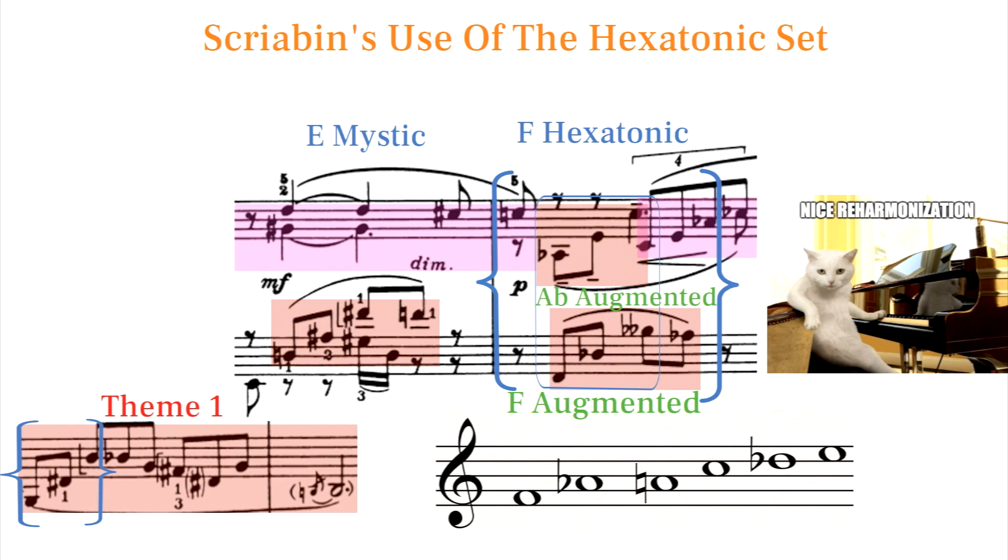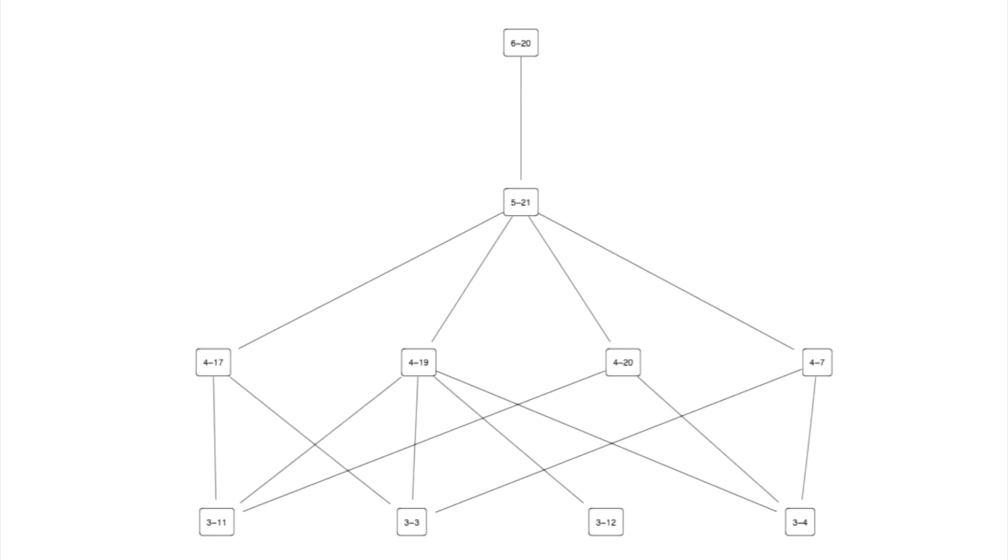There's only one five note subset of the hexatonic scale, and that's 521.